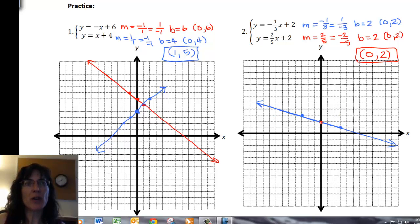So from here, I do a rise of two, and a run of five, puts me right there, rise of negative two this time, run of negative five, puts me right there. So there's the points for my next line.